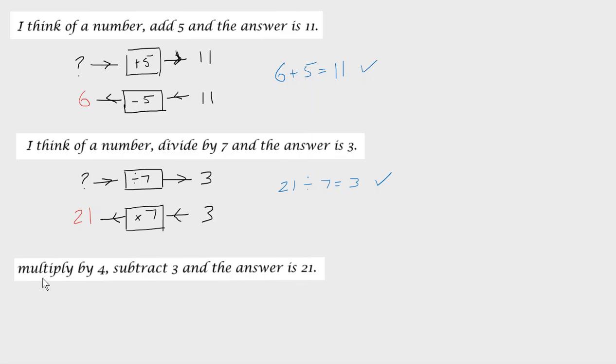I think of a number, multiply it by 4, subtract 3, and the answer is 21. So I think of a number. The first thing is I multiply it by 4. We've done two things here. I subtract 3 and the answer is 21.